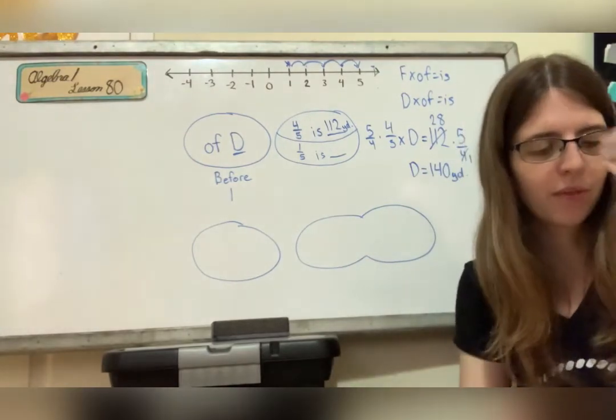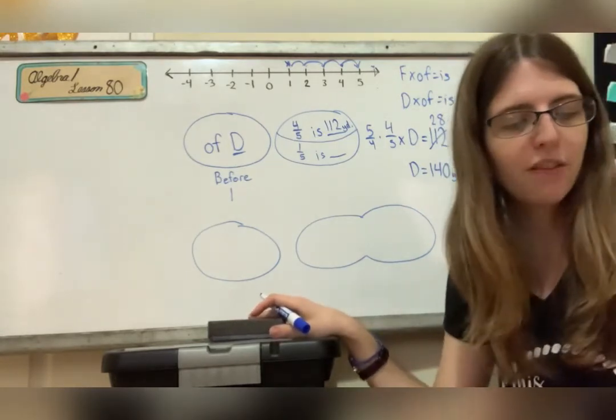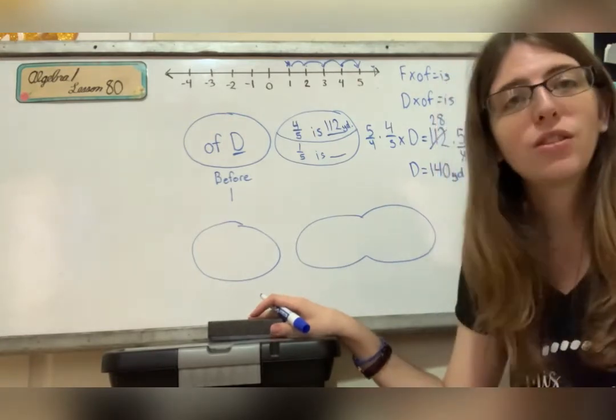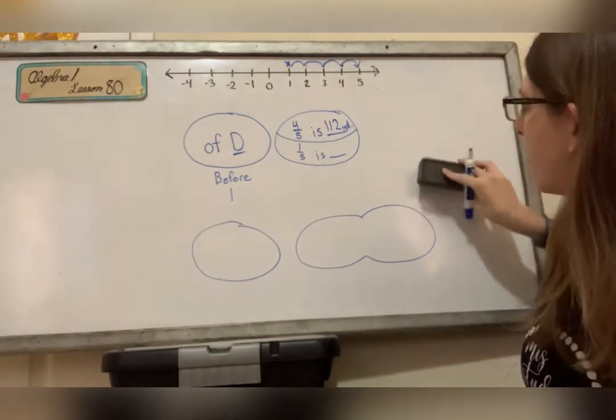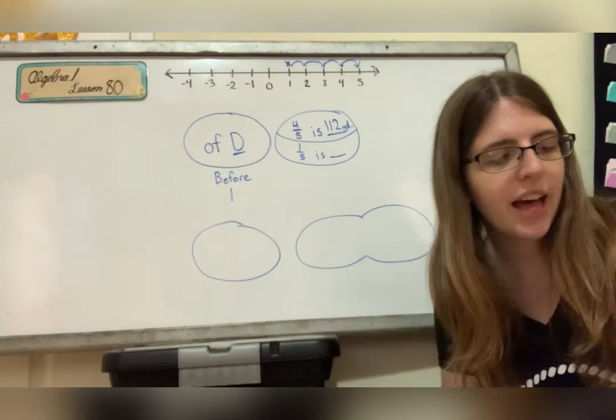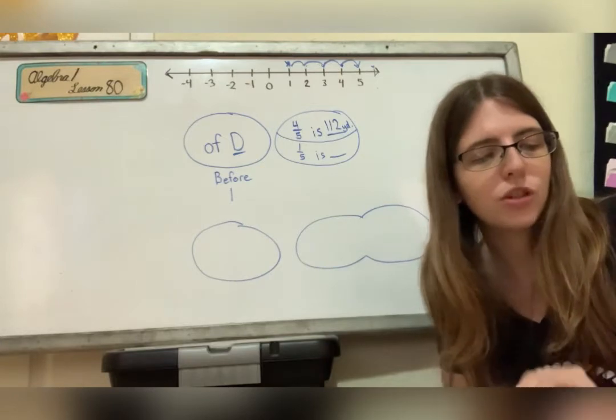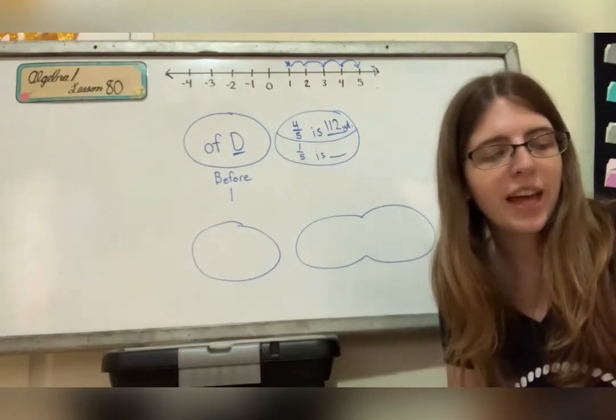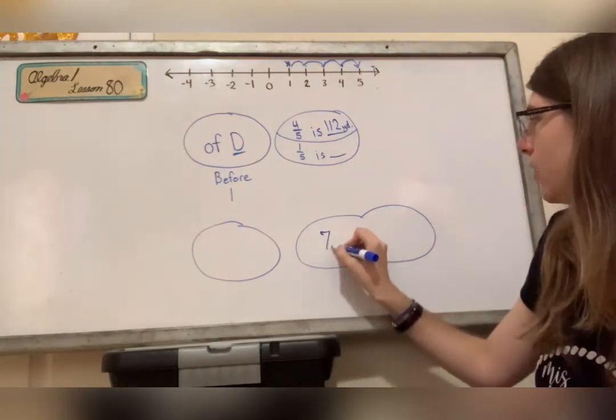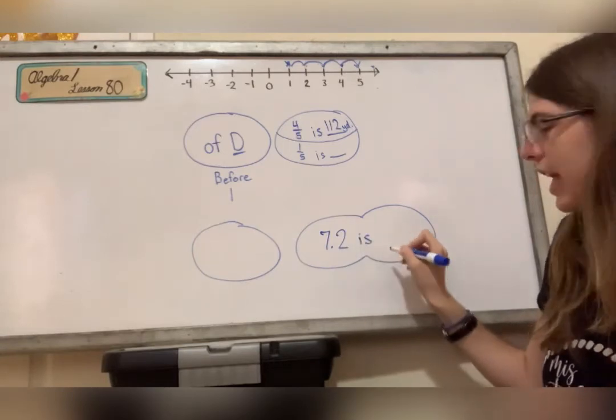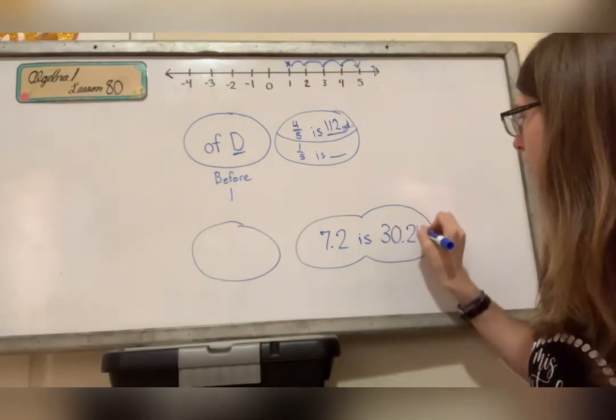Let's try another one. Maccabee guessed that the total was 30.24, but this was 7.2 times the total. What was the total? So here I see that his guess was 30.24, but this was 7.2 times the total. 7.2, that decimal is greater than one, so that means I'm going to use this bubble. So my decimal is 30.24.